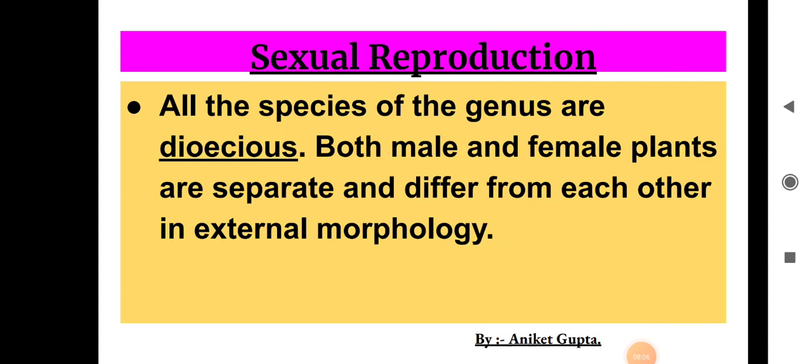Next is sexual reproduction. All species of the genus are dioecious, meaning both male and female plants are separate. They differ from each other in external morphology — the male plant bears male sex organs and the female plant bears female sex organs.